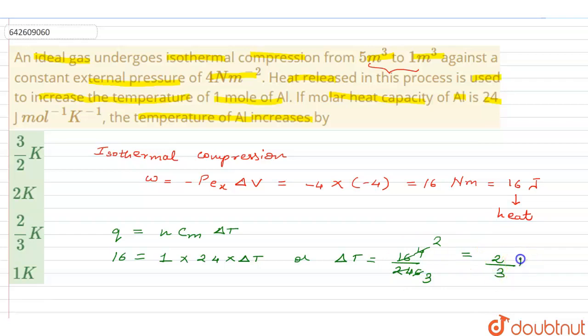Two by three kelvin. Perfect, easy to understand. So they have asked us: temperature of Al increases by... The factor by which it is going to increase has to be presented, and that has already been found out.